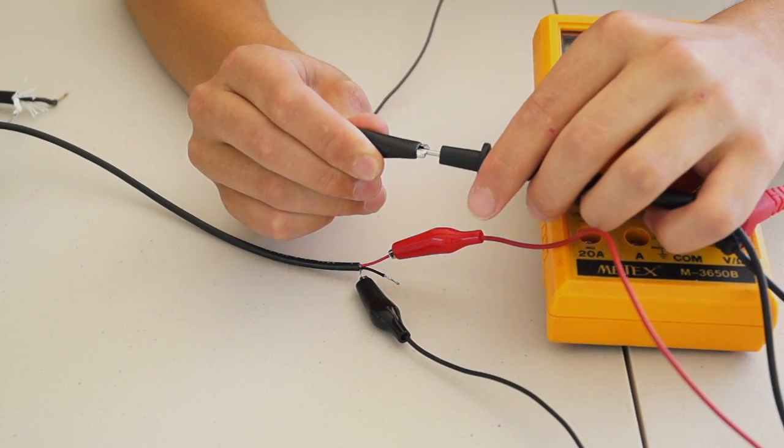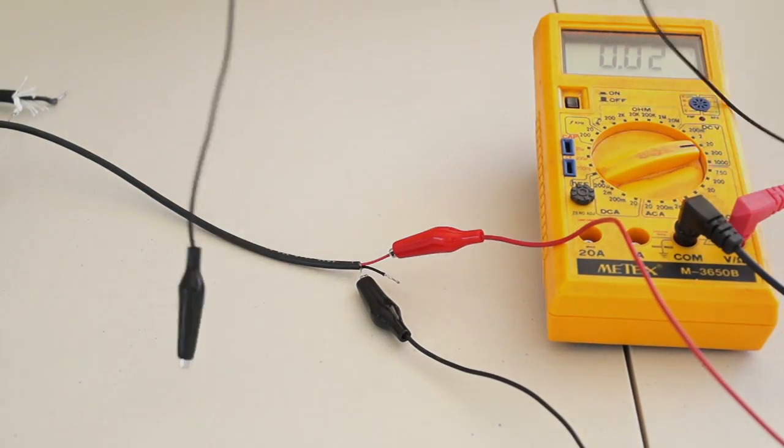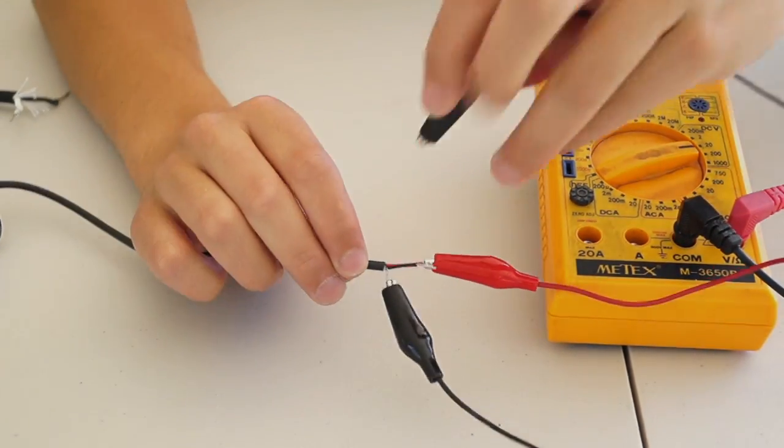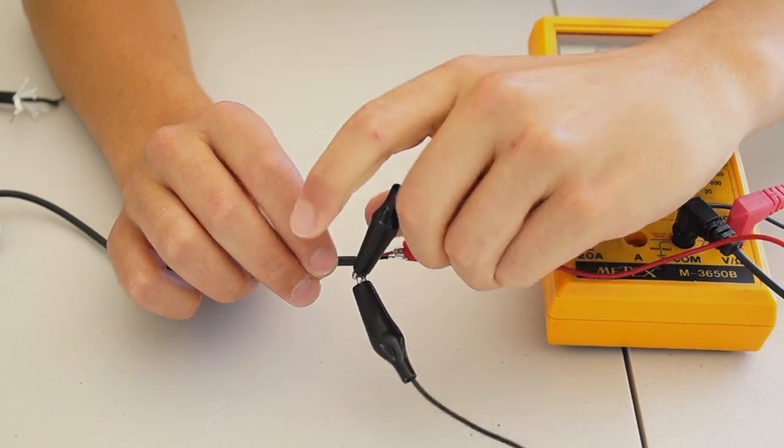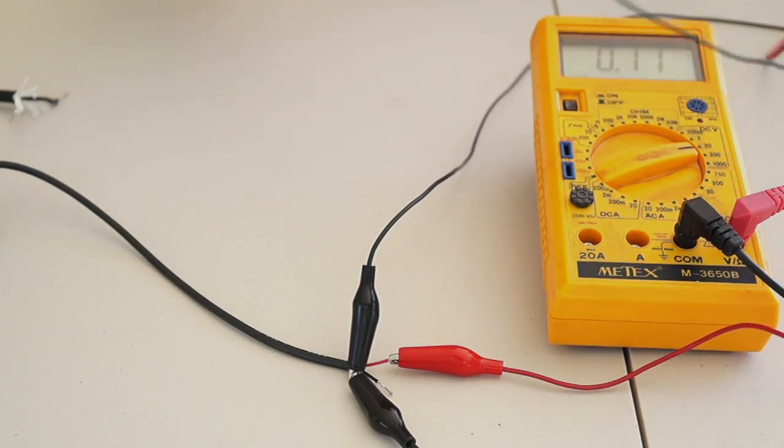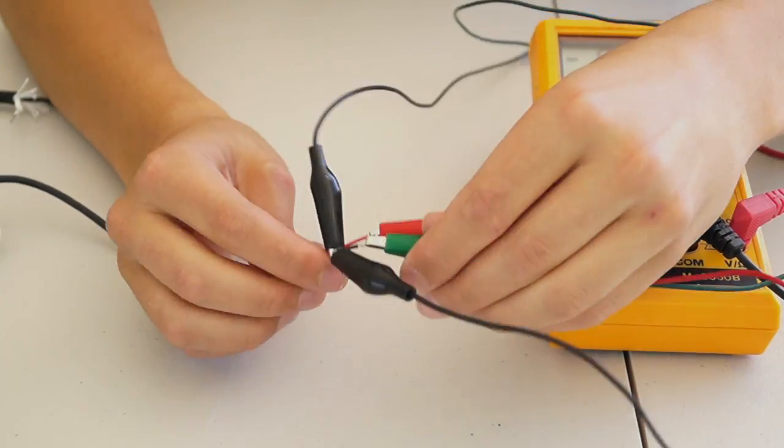To connect to your multimeter, connect another alligator clip from the black tip on the meter to the bare wire of the aquaplum. Next connect a green alligator clip from the red tip on the meter to the black wire on the aquaplum.